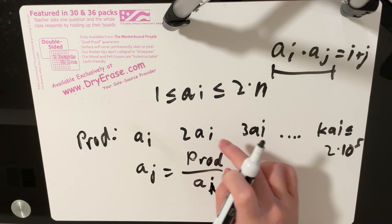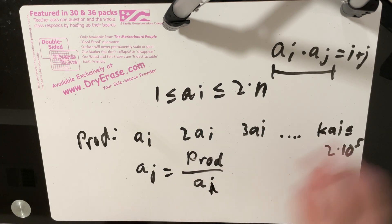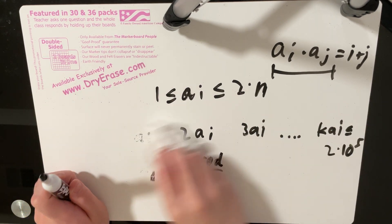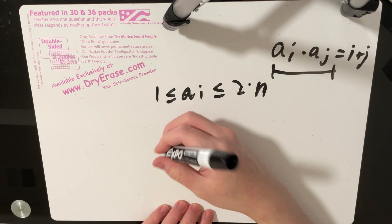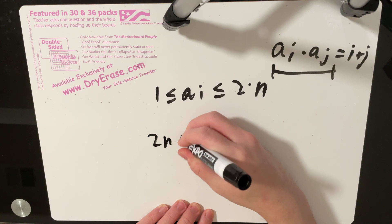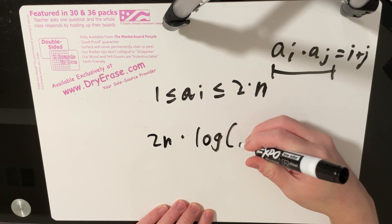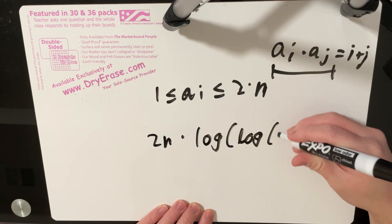And so because you're iterating over all numbers that have a divisor of ai from 1 to 2 times n, this is well known that this doesn't have a complexity of 2 times n squared, but rather it has a complexity of 2n times log of log of 2n.